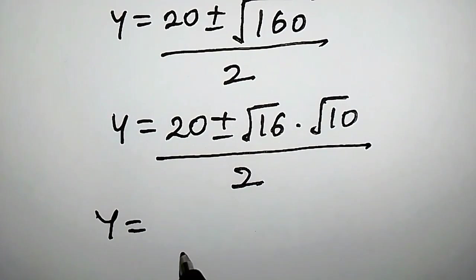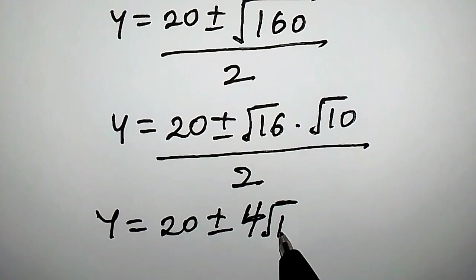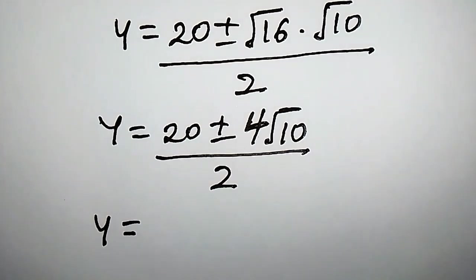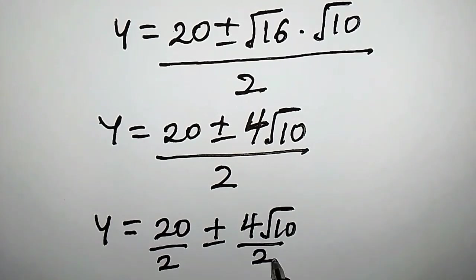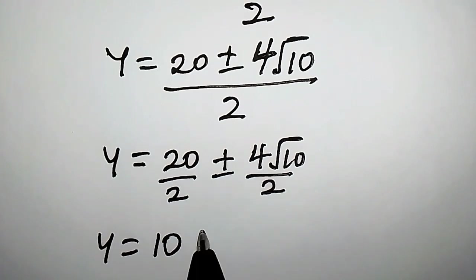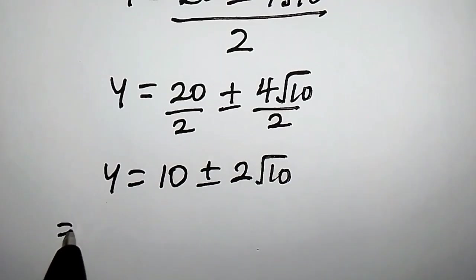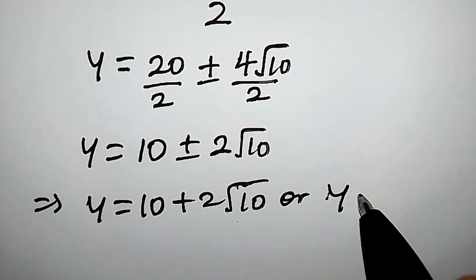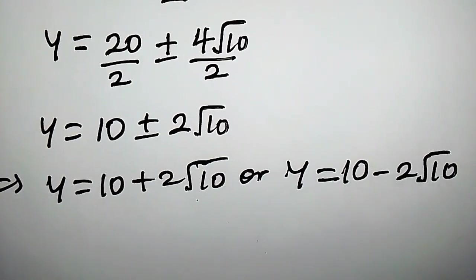So y equals 20 plus or minus the square root of 16 — which is simply 4 — times the square root of 10, divided by 2. The right-hand side can be written as 20 divided by 2, plus or minus 4 root 10 divided by 2. That gives y equals 10 plus or minus 2 root 10. This implies y equals 10 plus 2 root 10, or y equals 10 minus 2 root 10.